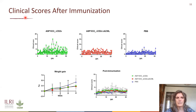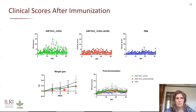Here are the clinical scores after immunization. The CD2V knockout group shows a number of peaks — the pigs were not completely comfortable with this immunization but all made it through. The double knockout looks far better; they seem to be more attenuated. The PBS group shows a few small peaks due to some lameness observed in larger pigs, likely due to the floor in the animal facility, so we are looking into getting some mats. Weight gain was highest in the PBS group, with slightly lower but equal weight gain in the other two groups.